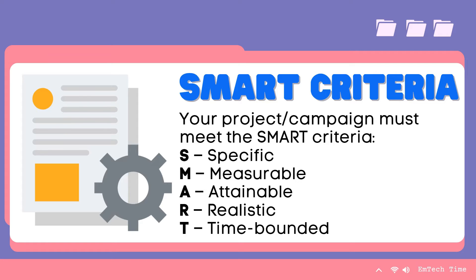Last but not least is T for Time-bound. What time scale are you looking at? What is an appropriate deadline for achieving the goal? If you want to achieve greater success, start using the SMART criteria to set the goals for a specific project. You first need to outline the specific outcomes you hope to achieve. After defining the outcomes, define the metrics you will use to track your progress and measure success. Each goal should be achievable and relevant. Review the goal to ensure you have the necessary resources. The last step is setting the target date for completing the goal, giving you a deadline to work with and helping you stay on track.